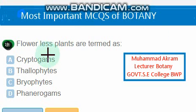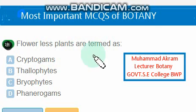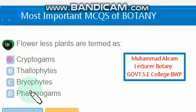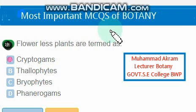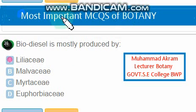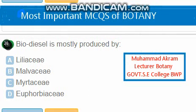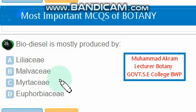Very important question: flowerless plants are termed as cryptogams — option A is the right one. Cryptogams are plants which have a hidden reproductive system. Biodiesel is mostly produced from plants of the Euphorbiaceae family.